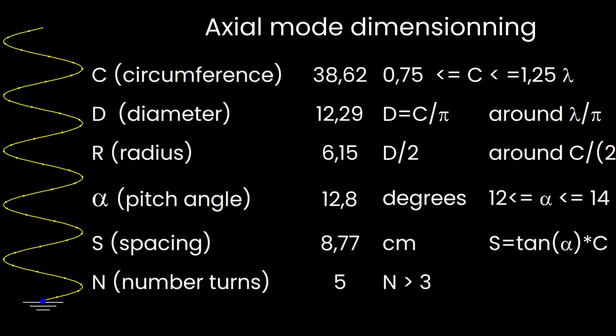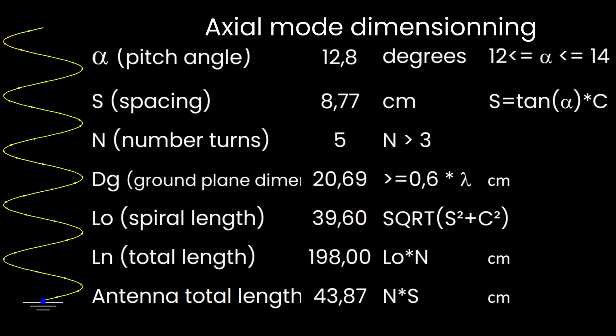So in other words, the number of turns is a choice we have to make as a compromise between more or less turns, so the size of the antenna, more or less directional capacity of the antenna, the beam width. And in that case, in this example, we will choose five turns. The antenna overall length is the number of turns times the spacing, which in this case, with the numbers we have taken, is 43.87 centimeters or 0.4387 meters. That's it for the theoretical dimensioning of the antenna.